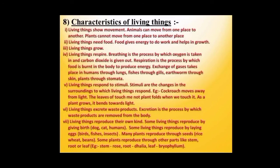Living things excrete waste products. Excretion is a process by which waste products are removed from the body. Another important characteristic of living things is that they reproduce their own kind. Some living things reproduce by giving birth to young ones, like dog, cat and humans. Some reproduce by laying eggs, like birds, fish and insects. Many plants reproduce through seeds. Some plants reproduce through other parts like stem, root or leaf. The plant which reproduces with the help of stem is rose, through root is dahlia, and through leaf is bryophyllum.